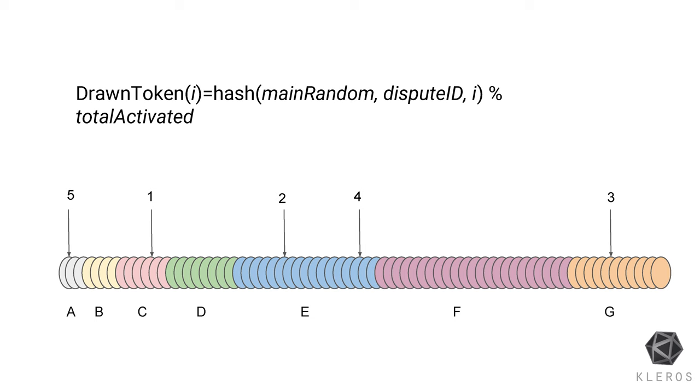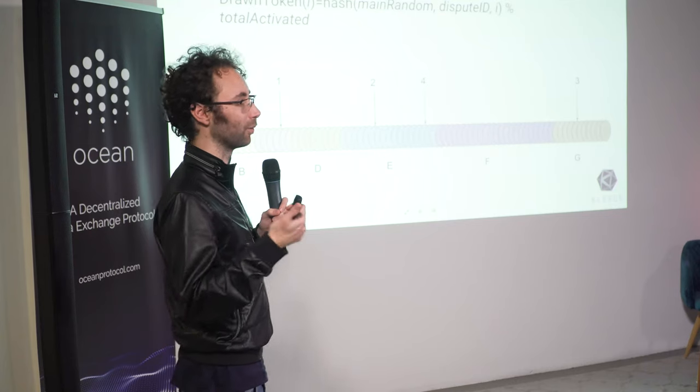Currently we use the block hash for randomness, which is not perfect due to two potential attacks. However, the attacks cannot fix the random number to a particular value. The first attack is block withholding: a miner can discard a block they don't like, but by doing so they waive the block reward and all fees — so it's expensive and only allows re-rolling, not fixing the number.